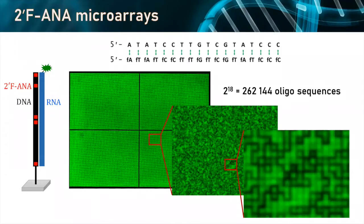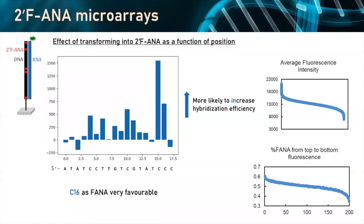Here is just one example of a particular combination of FANA and DNA in that 18-mer. Essentially you end up having the entire story on the same surface, and then you do a single hybridization assay with the same fluorescently labeled RNA complement. That gives you the entire scan — the entire duplex formation of all 262,000 sequences. You can zoom in further and further, and start seeing all of these different spots, each containing a single sequence with differences in fluorescence telling us about the strength of duplex formation.